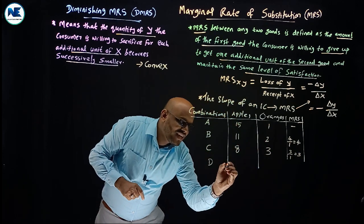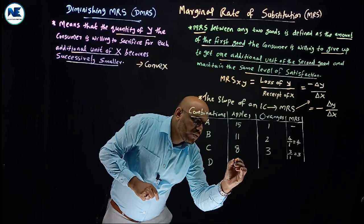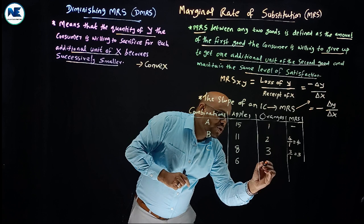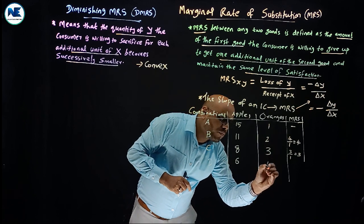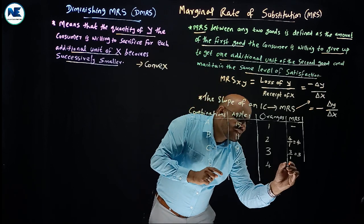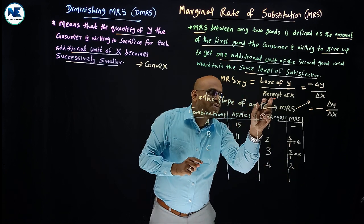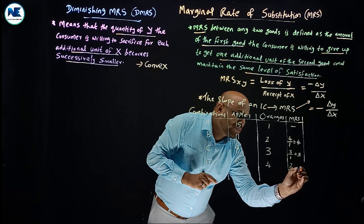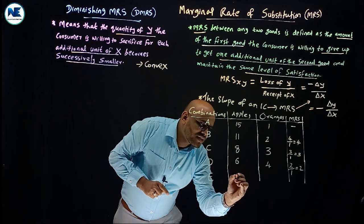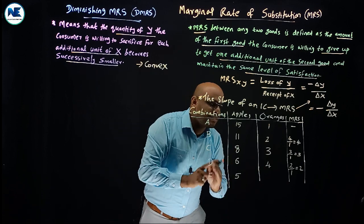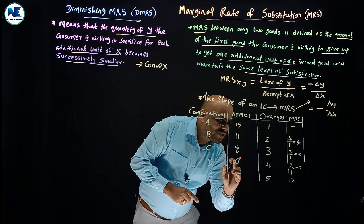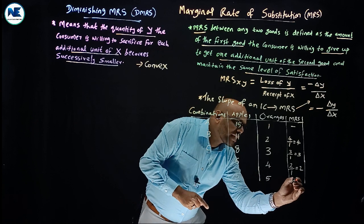In combination D the MRS is 2, and in combination E, moving down to 6 apples and 5 oranges, you give up only 1 additional apple to get one more orange. The MRS = 1. So the marginal rate of substitution is declining from combination A through E: 4, 3, 2, 1.